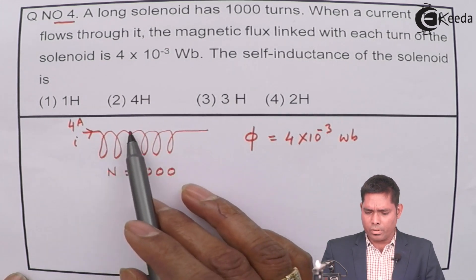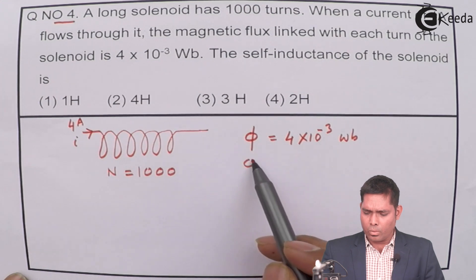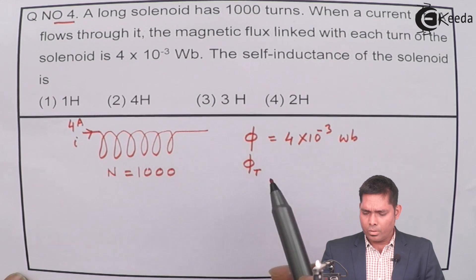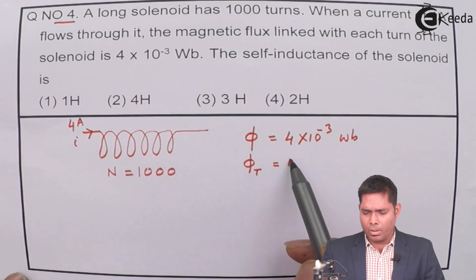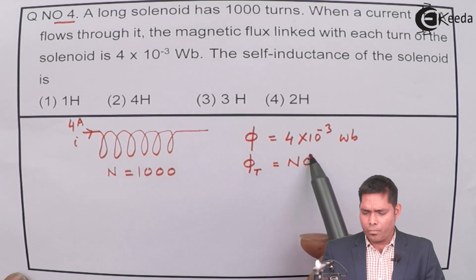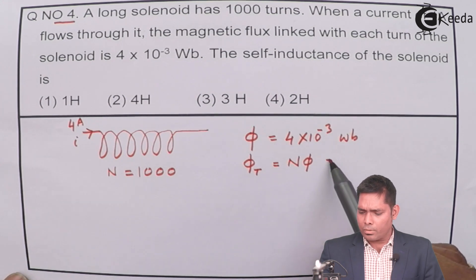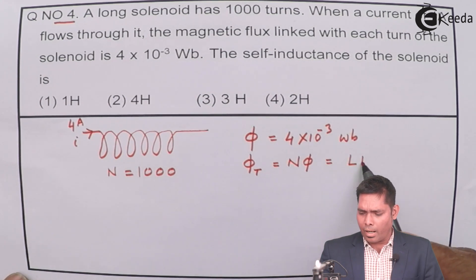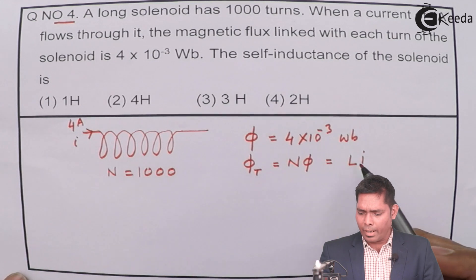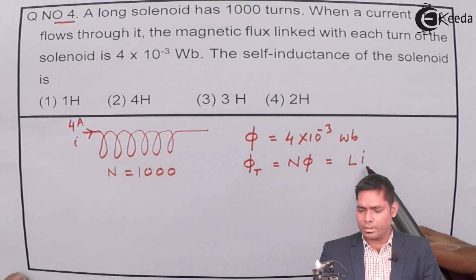What is the total flux associated with the solenoid? The total flux equals the number of turns times flux due to each turn. Therefore, the total flux formula is L into I, where L is self-inductance and I is the current flowing.